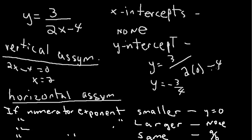And now I have 3 over negative 4. This is your y-intercept. This graph will cross the y-axis at y equals negative 3 over 4.